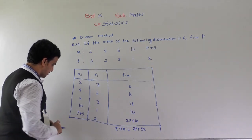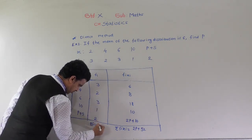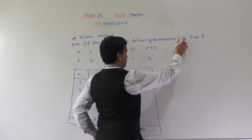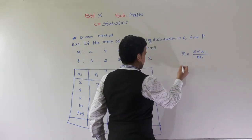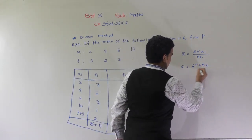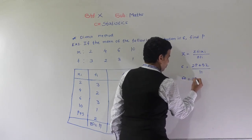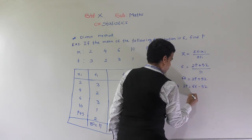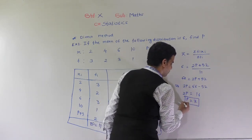Now summation fi is 3 plus 2 plus 3 plus 1 plus 2, which equals 11. Now we find the value of p using mean equals 6. So x-bar equals summation fixi upon summation fi: 6 equals 2p plus 52 divided by 11. So 11 into 6 is 66 equals 2p plus 52. So 2p equals 66 minus 52, which is 14. Therefore p is equal to 7.